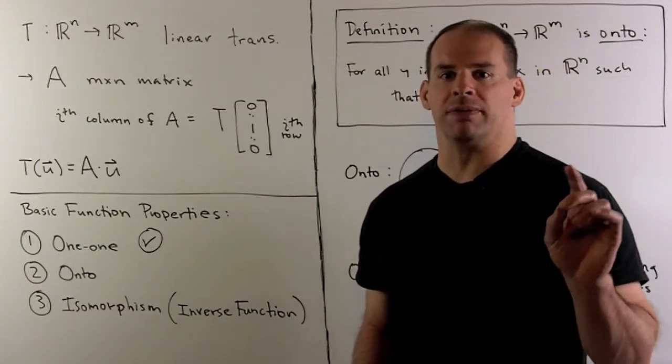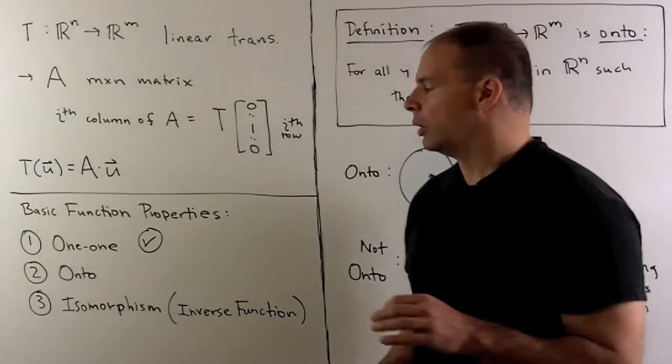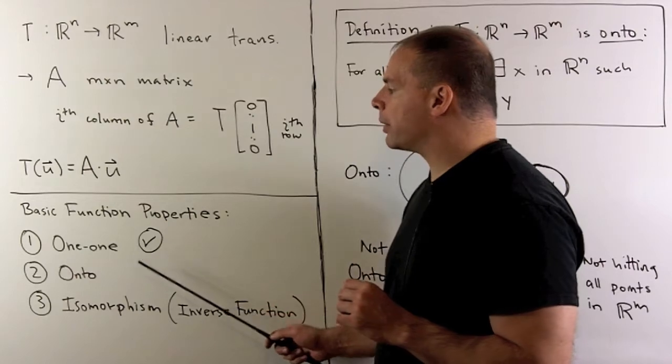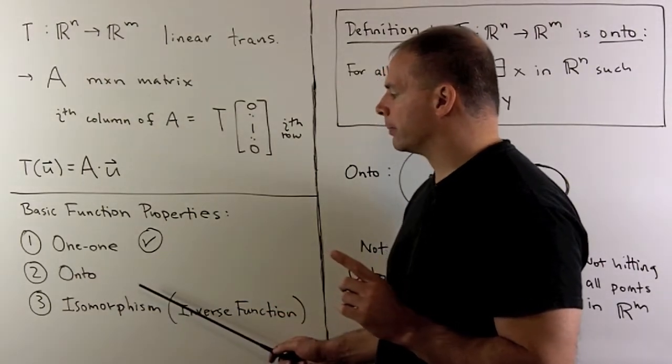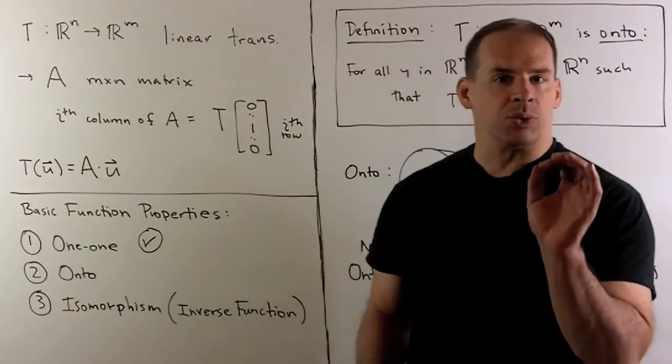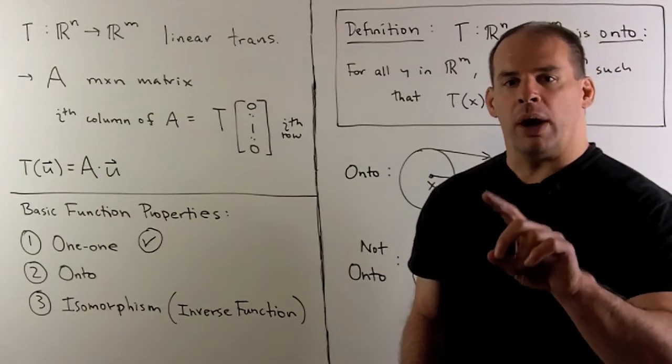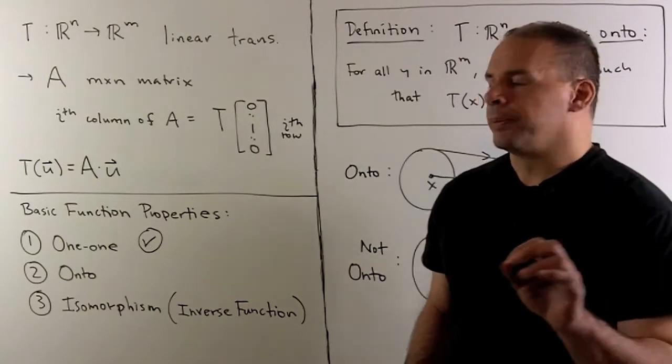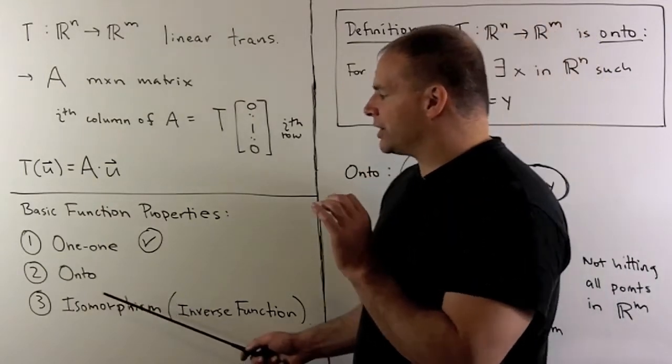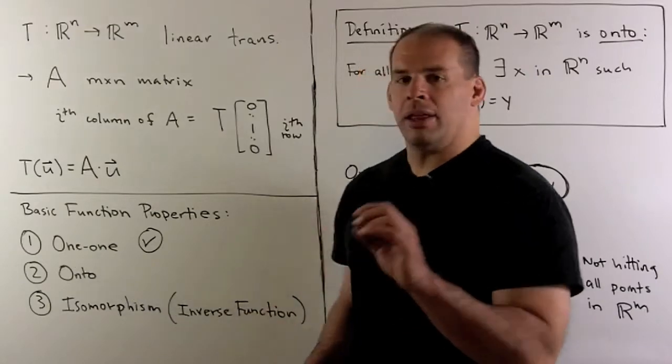Continuing with the basic function properties of linear transformations, we move from the one-to-one property to the onto property. As we noted before, when we have the property of linearity, it's going to be a lot easier to test for our properties than without.